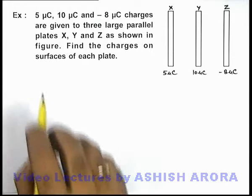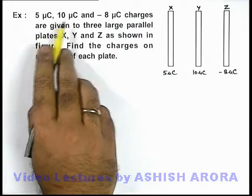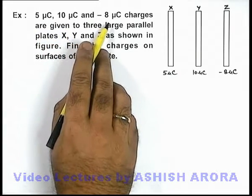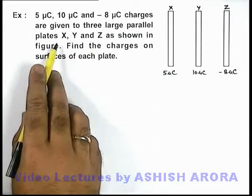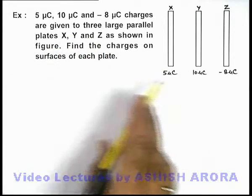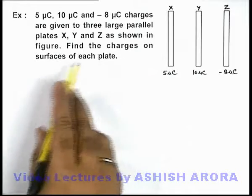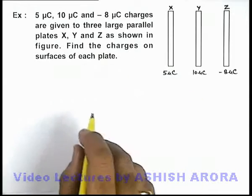In this example we are given that 5 micro coulomb, 10 micro coulomb, and minus 8 micro coulomb charges are given to 3 large parallel plates X, Y, and Z as we can see in the figure. We are required to find the charges on the surfaces of each of these plates.